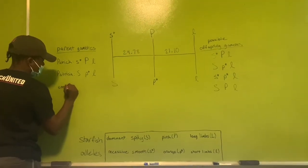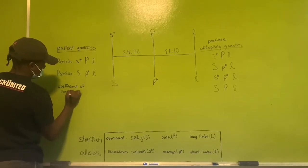And to the right, as you can see, I wrote all the possible gametes that could be created from this cross.